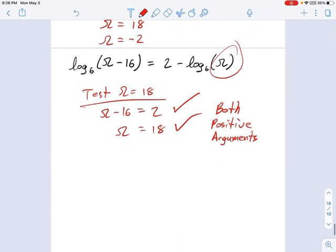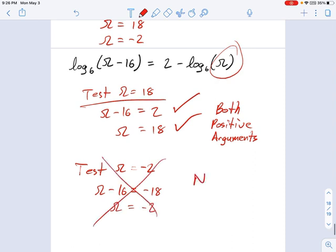And if you check out the other solution we had, negative 2. Let's test that one. Test omega equals negative 2. So now, what do we have? Omega minus 16. Well, that's just, you know, that's really negative. And obviously, omega by itself is also negative 2. So this whole thing is not going to work. Those are negative arguments. And if you remember some of the rules of logarithms, you cannot have negative arguments in a logarithm.